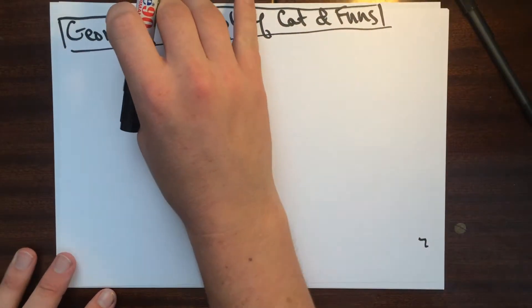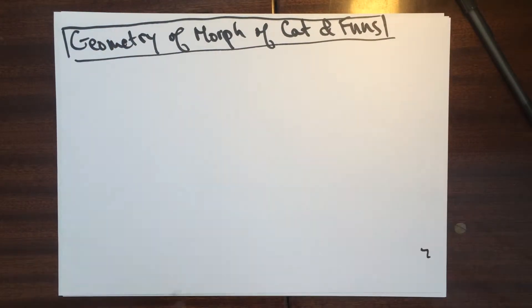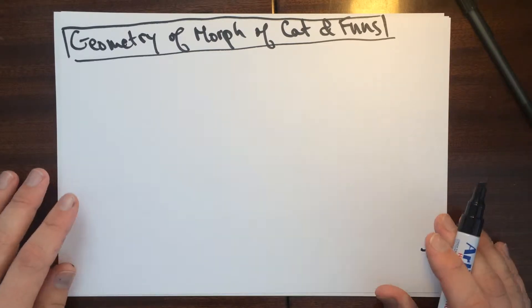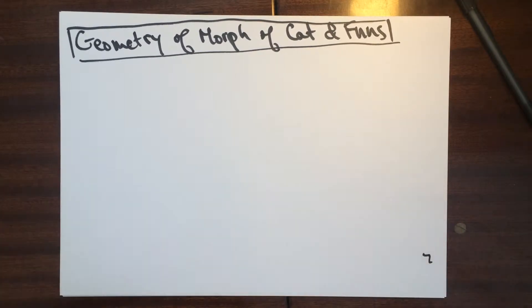This is the video on the geometry of morphisms of categories and functors. So when we're going to be working with stacks and algebraic spaces, we want to be able to say when a morphism is smooth, étale, proper, surjective, things like this.